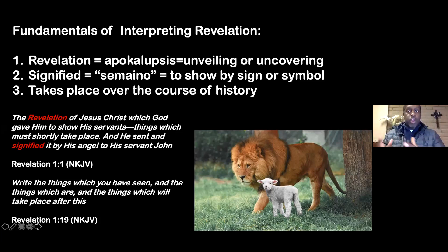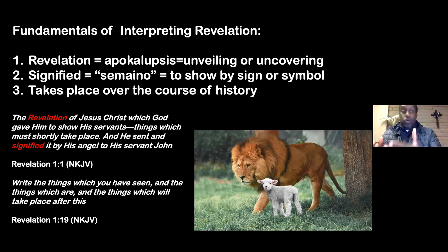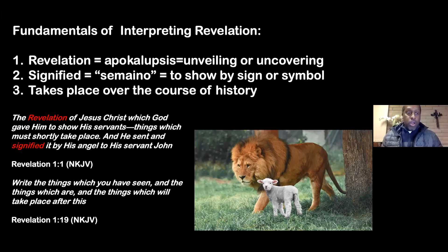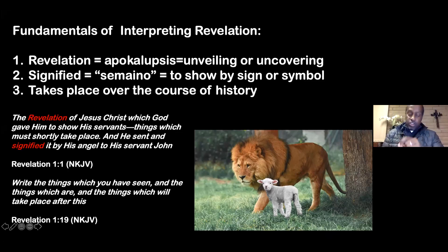Revelation means unveiling, uncovering — we're uncovering Jesus Christ. It's done by signs or symbols; that's the way it was given to John. So we look for signs and symbols within Revelation. Revelation also takes place over the course of history — things that were, things which we have seen, things which are, and things which will take place after this.